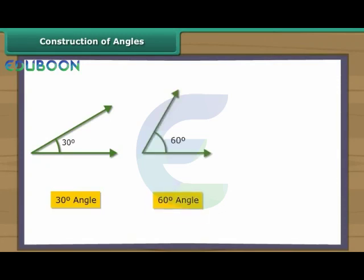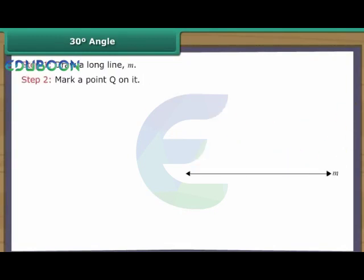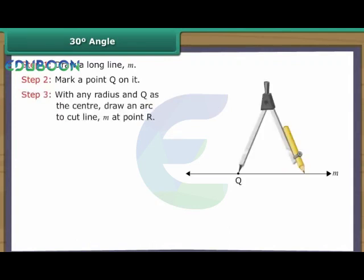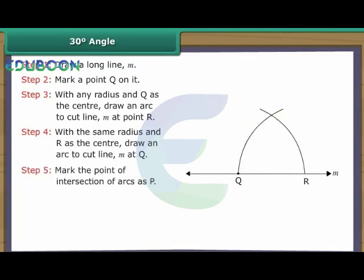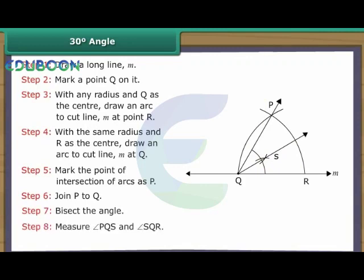Construction of angles. Let us now construct some special angles: 30 degrees, 60 degrees, and 120 degrees. Construction of 30 degree angle. Draw a long line M. Mark a point Q on it. With any radius and Q as the centre, draw an arc to cut line M at point R. With the same radius and R as the centre, draw an arc and mark the point of intersection as P. Join P to Q. Bisect the angle. Measure angles PQS and SQR. Angle PQS equals angle SQR equals 30 degrees.